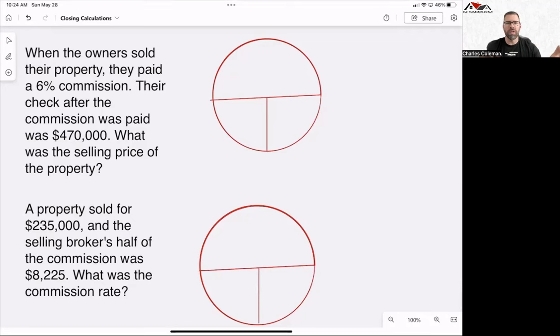The first one reads, when the owners sold their property, they paid a 6% commission. Their check after the commission was paid was $470,000. What was the selling price of the property? And so I already pre-did these two T-bar circles, if you will. And so this will be the first step. You create these on your exam.